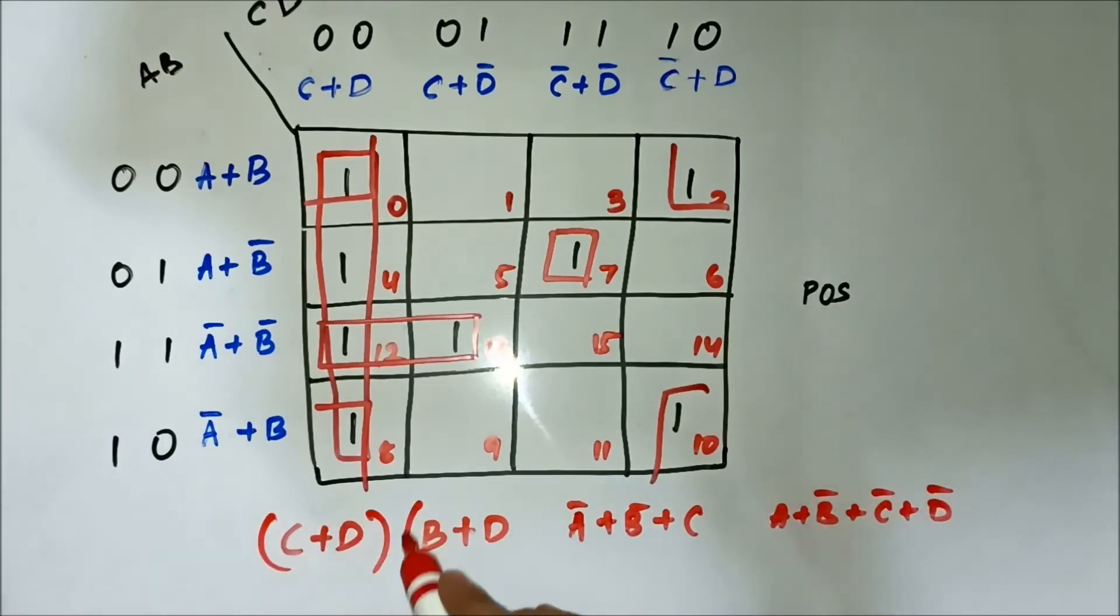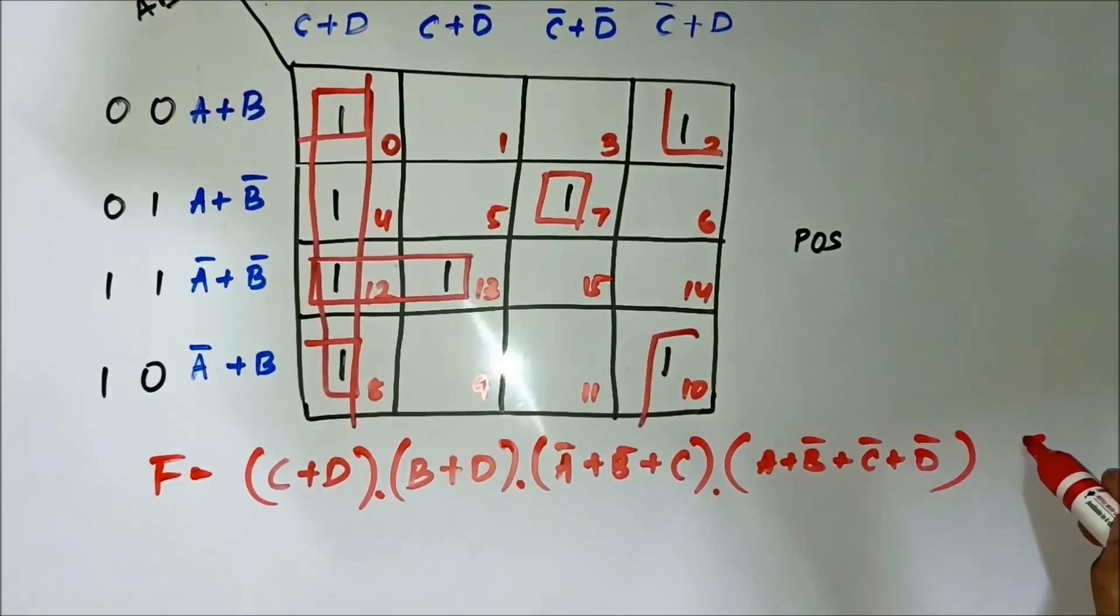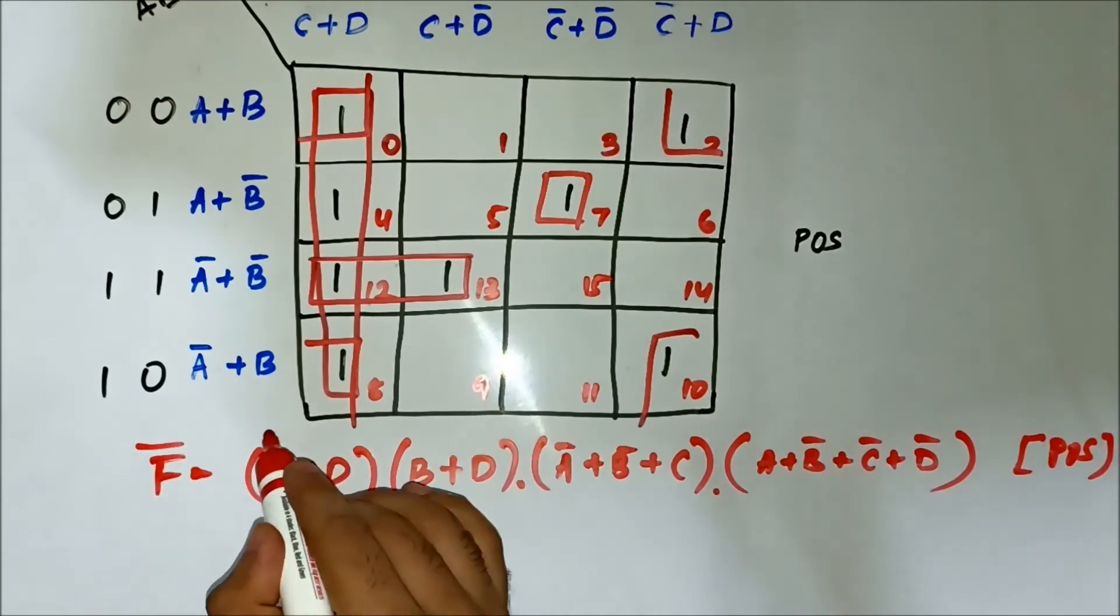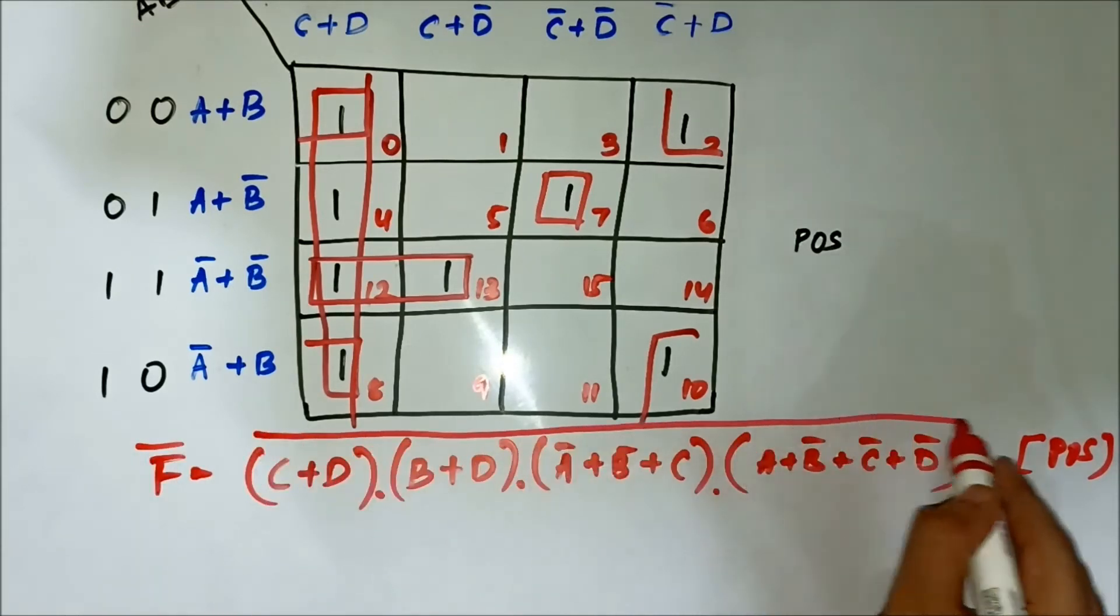This product of sum. Now, this is POS. We need SOP. So simply complementing it, applying De Morgan's theorem.